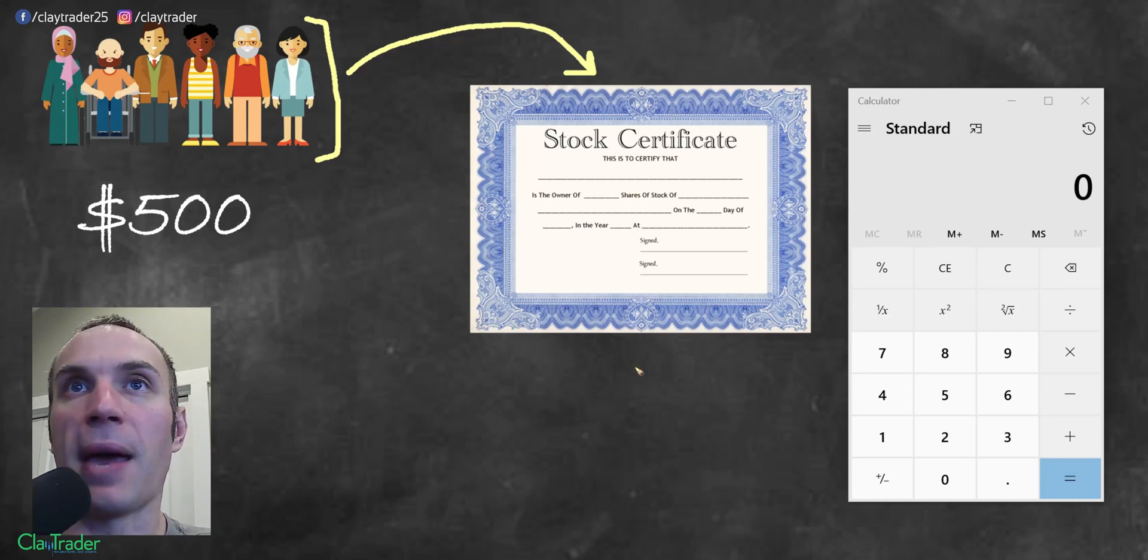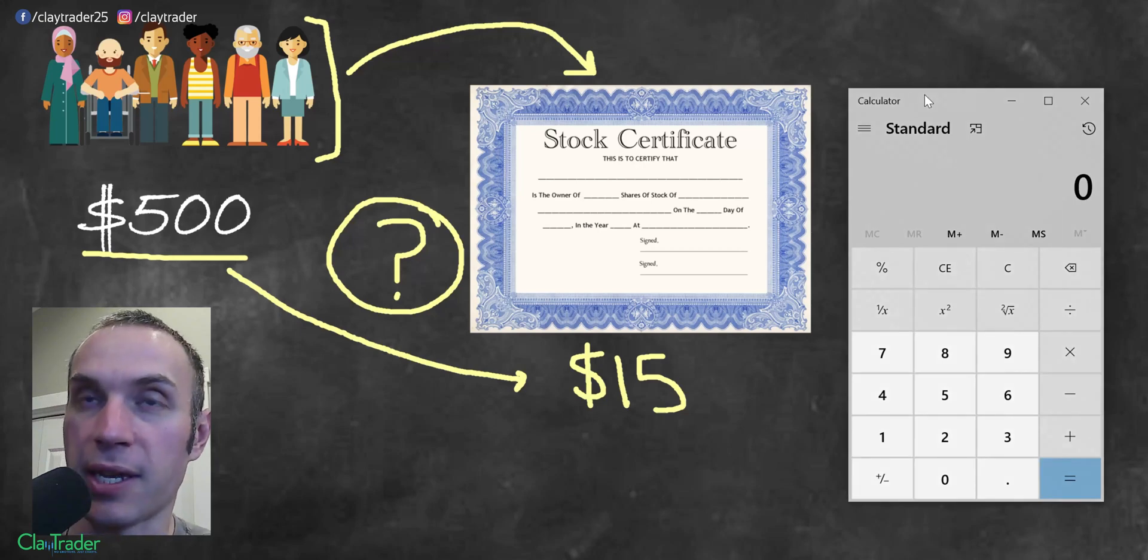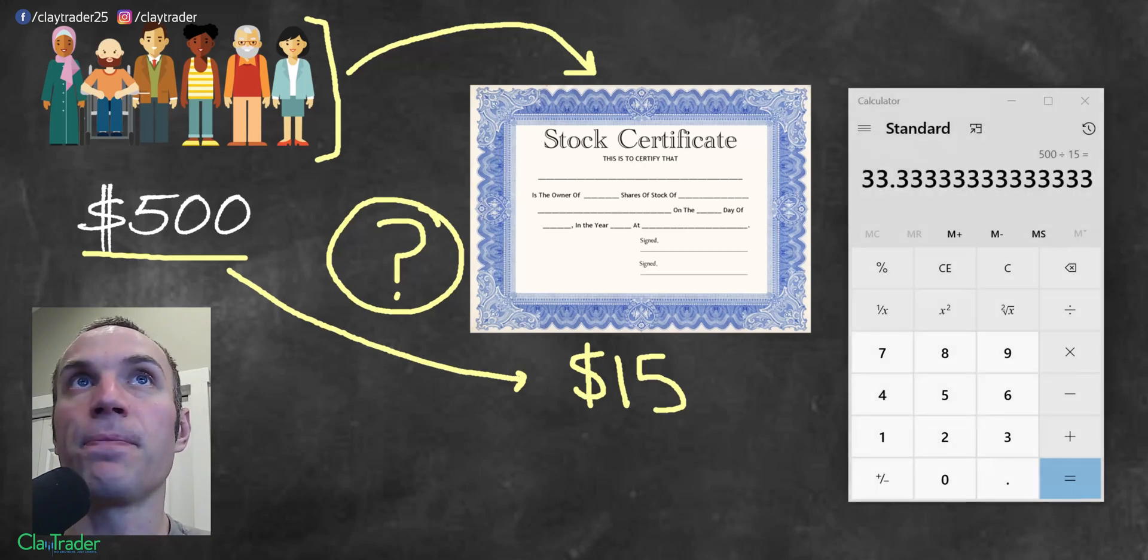So in this situation, to start off the math, let's just say that this share right now, this stock is worth $15. That's the price, and that's what you're going to go and pay for it. So the question becomes, okay, how many shares can you buy? You have $500, the price is $15, so how many can you buy? The math here is very simple. You're going to take the amount of money you have, and you're going to divide that by whatever the price is. So in this situation, $15. Here, you would be able to go and buy 33 shares of that stock.